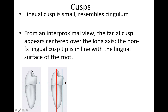Cusps: the lingual cusp is very small and resembles a cingulum. From an interproximal view, the facial cusp is centered along the long axis of the tooth — it sits right above the long axis. The lingual cusp is just about in line with the lingual surface of the root.